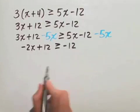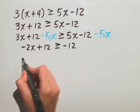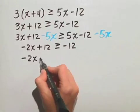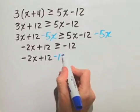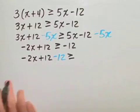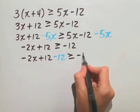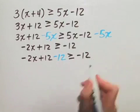Let's move the constants to the right hand side of this inequality. We have negative 2x plus 12. We'll subtract 12 from both sides, is greater than or equal to negative 12 minus 12.